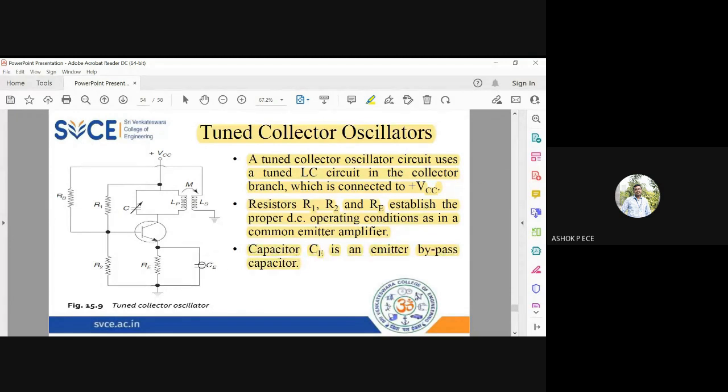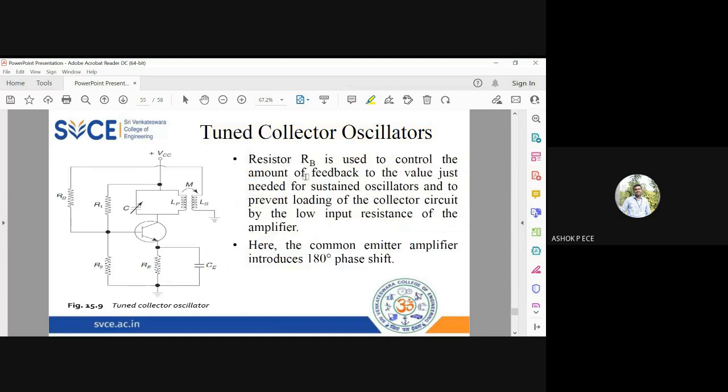Which will be available only at high frequency. So RB will ensure that the amount of feedback is adjusted. Usually the base current will be very small so RB value will be very large. Here this RB has two purposes: one is to control the base current, the other thing is the feedback signal is coming only through RB, so if you choose the proper value of RB it can control the amount of feedback which is going to enter the base.